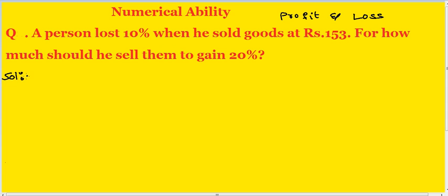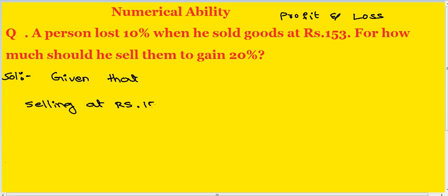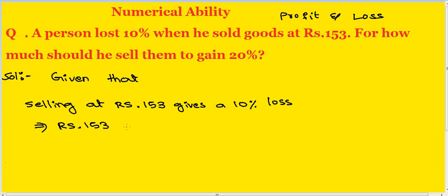Solution. Given that a person lost 10% when he sold goods at Rs 153. So, selling at Rs 153 represents a 10% loss. From this, Rs 153 is 90% of the cost price.